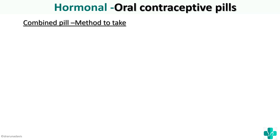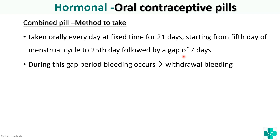Regarding instructions given to patients: they are told to take the pill orally every day for 21 days, starting from the fifth day of the menstrual cycle — that is, after bleeding begins — continuing up to the 25th day. After that, a gap of 7 days is given. During this gap, there is bleeding — but this is not actual menstruation; it is called withdrawal bleeding.